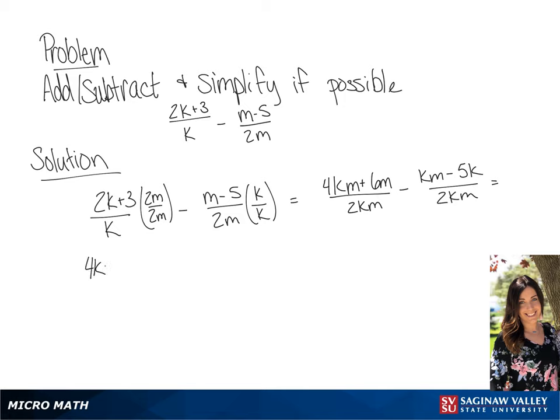We're going to rewrite this so that it's all in one fraction. Now we are going to distribute the negative 1 that's in front of the parentheses, giving us 4km plus 6m minus km plus 5k all over 2km.